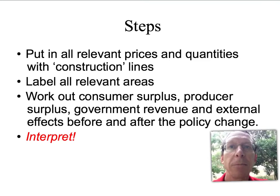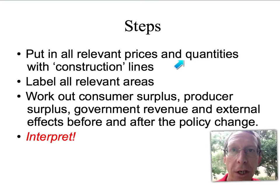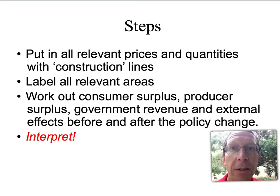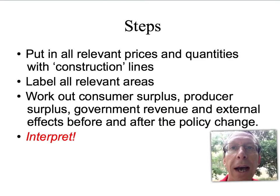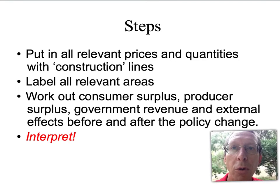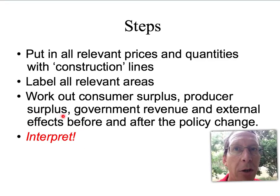Here's a fairly simple four-step process to answer these questions. Step one: put all relevant construction lines in the demand and supply diagram. Step two: label all the relevant areas — don't worry about over-labelling. Step three: work out consumer surplus, producer surplus, government revenue, and external costs and benefits before and after the policy, then compare them to find changes in surplus and deadweight loss. Step four, the important one: interpret the changes — work out who's won, who's lost, and why there's a deadweight loss.